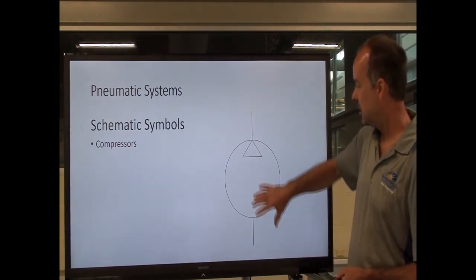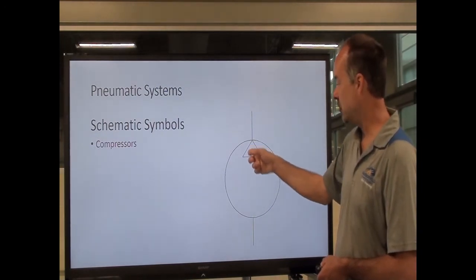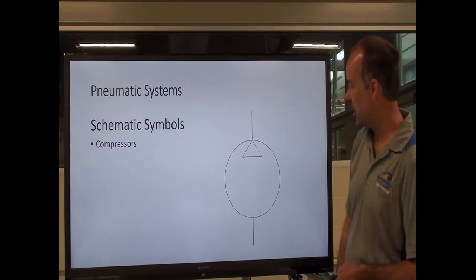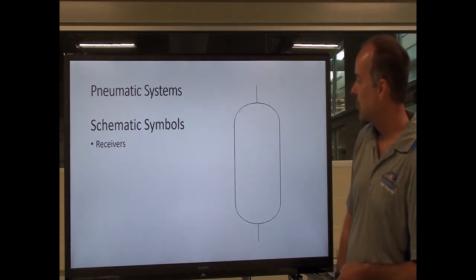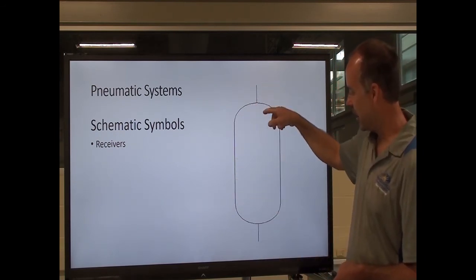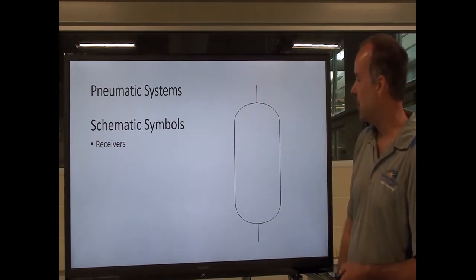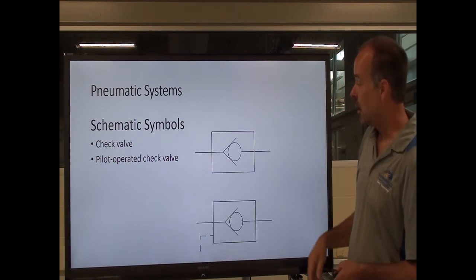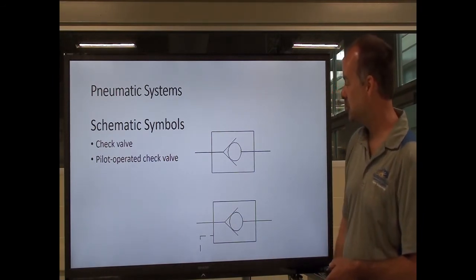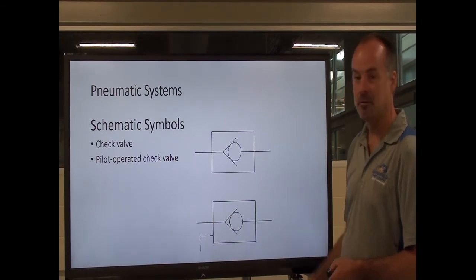Looking at schematic symbols: the compressor symbol is like a hydraulic pump except the triangle is not colored in — just an outline. This tells me this is a pneumatic compressor versus a hydraulic pump. Receivers are shown as an oval with a line in and a line out, indicating a holding tank for a pneumatic system. Check valves are largely identical to your hydraulic counterpart symbols — they perform the same function, and you can find them in both hydraulics and pneumatics.